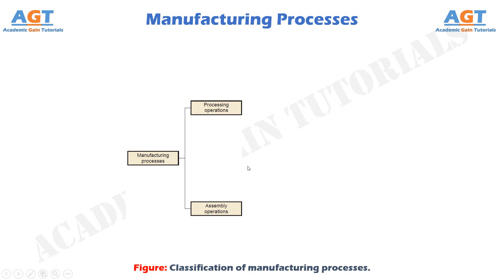An assembly operation joins two or more components to create a new entity, called an assembly, sub-assembly, or some other term that refers to the joining process. For example, a welded assembly is called a weldment.